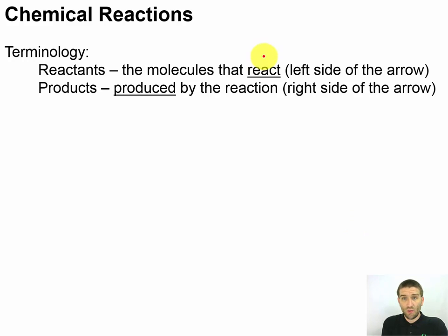Now those products are things being produced by a reaction. Notice that we're talking about the arrow. So we're going to have reactants on this side and products on this side.